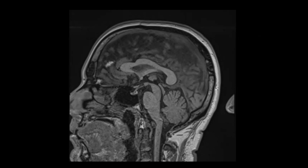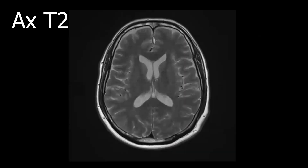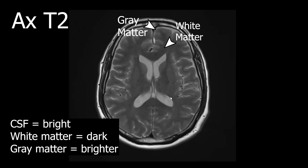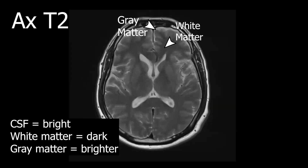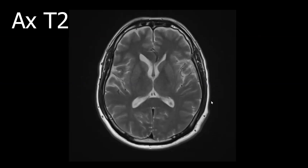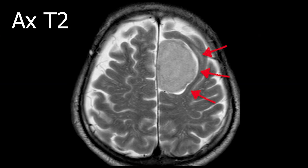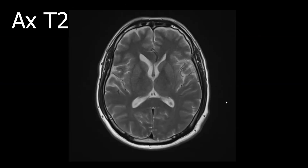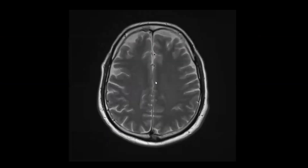The next sequence is axial T2. This is how an axial T2-weighted image looks. It is a great view of the ventricles, sulci, and essentially all the CSF spaces. The axial T2-weighted image also provides a great opportunity to assess the interface of a mass with CSF — for example, if we are trying to determine if a mass is intraaxial or extraaxial, the presence of a CSF cleft will be a useful feature for an extraaxial mass.